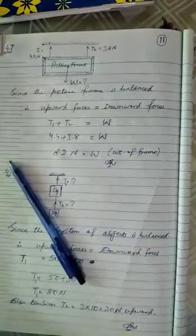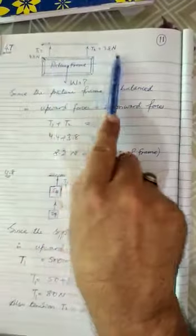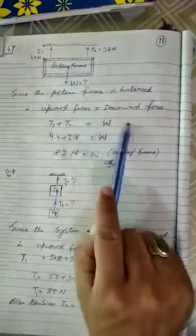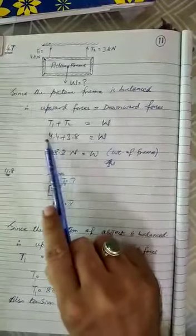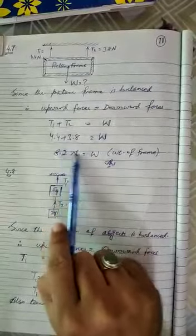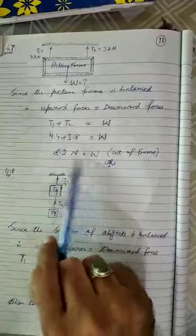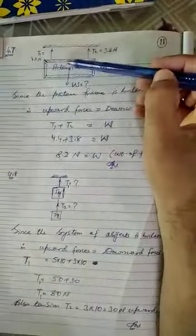So upward forces are tension one plus tension two. Downward is the only single force, that is W. Okay, T1 and T2 we have 4.4 and 3.8, so it means now W is equal to 8.2 Newton. It means these two forces in the form of tension acting vertically upward, and collectively they are basically applying 8.2 Newton force upward.